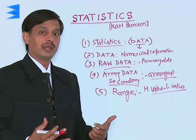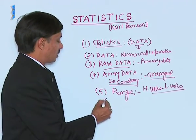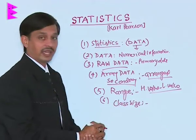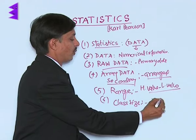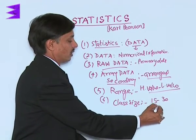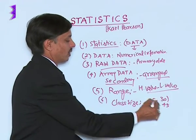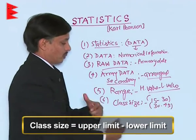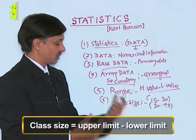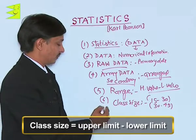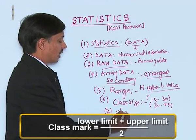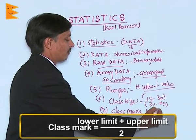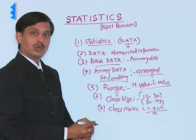The next term is class size. Suppose I say 15 to 30, then 30 to 45 — upper limit minus lower limit, and as per exclusive and inclusive information, we obtain the class size. Then we come to what is the class mark. The class mark is lower limit plus upper limit divided by 2.